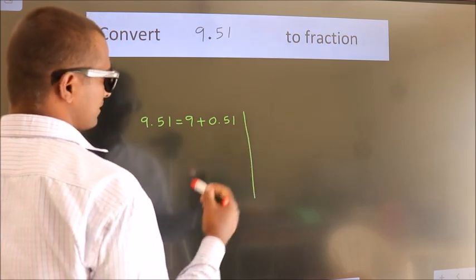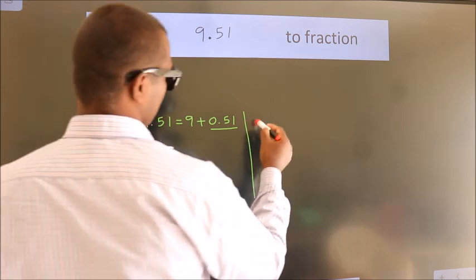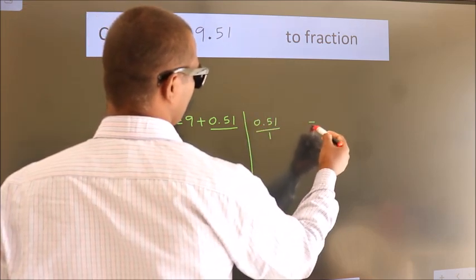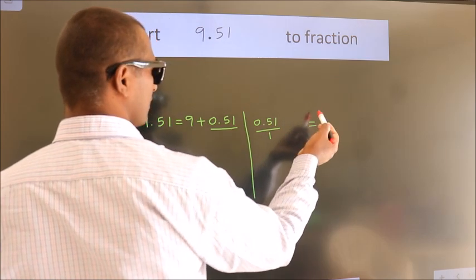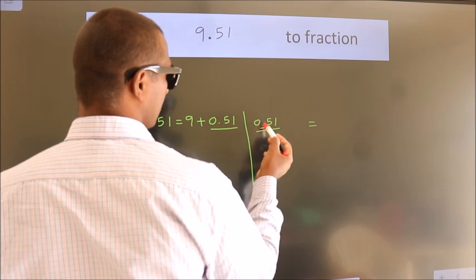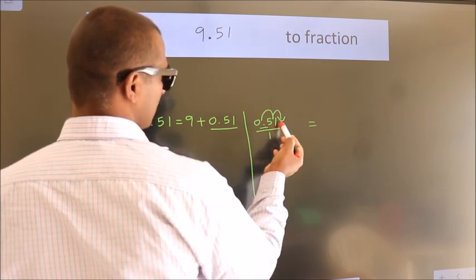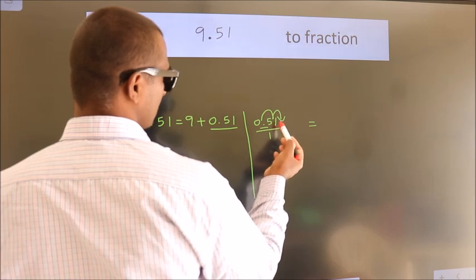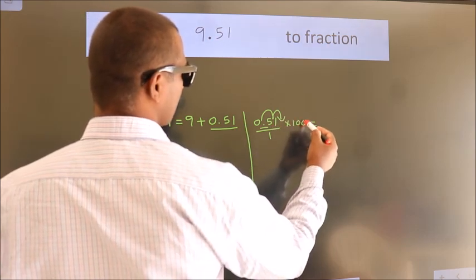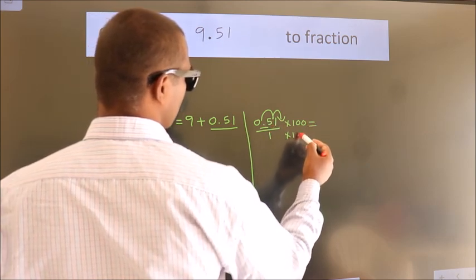Next, convert this to fraction over here. So 0.51. To convert this to fraction, we have to move this decimal after 1, 2 numbers. To move this decimal after 2 numbers, multiply it with 100. Whatever you are multiplying in the numerator, in the denominator also do the same.